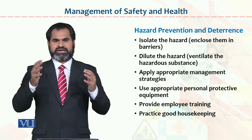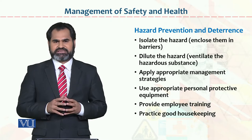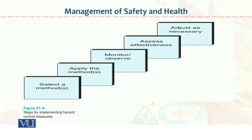Here we can see the steps: select a method, apply the method, monitor and observe it, assess its effectiveness, and adjust as necessary. जब ये काम आप करेंगे तो definitely आप काफी हद तक hazards को control कर लेंगे — इनको हम कहते हैं steps for implementing hazard control measures.